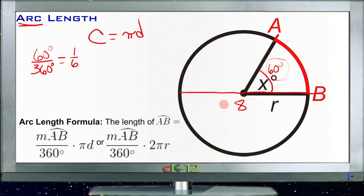Then if I take the diameter of the circle, which is 8, and multiply by π, that gives me a circumference of 8π, or approximately 24.